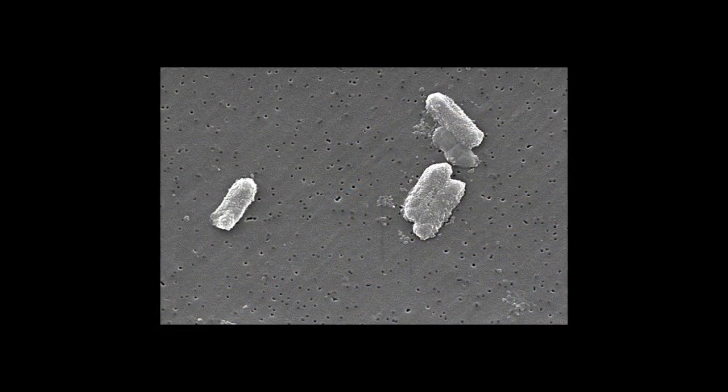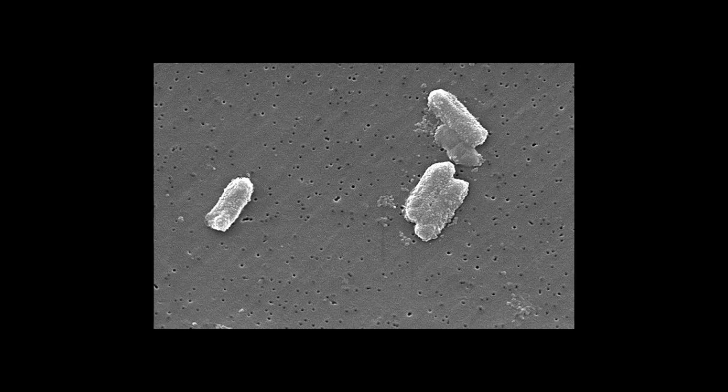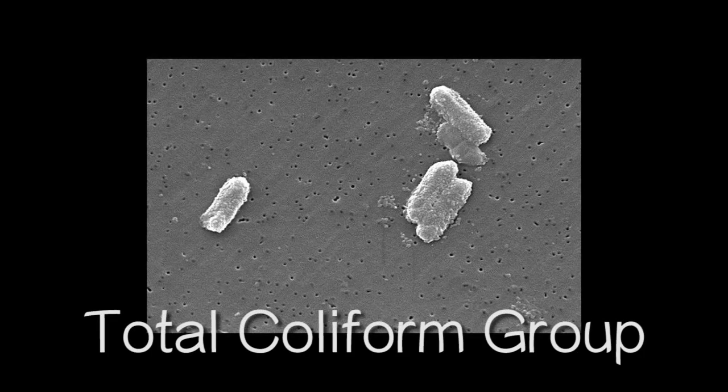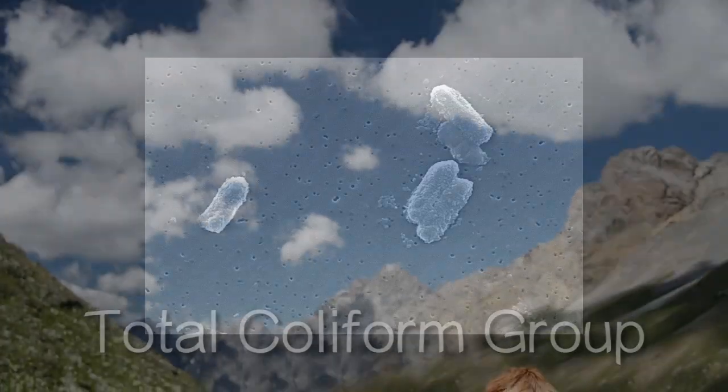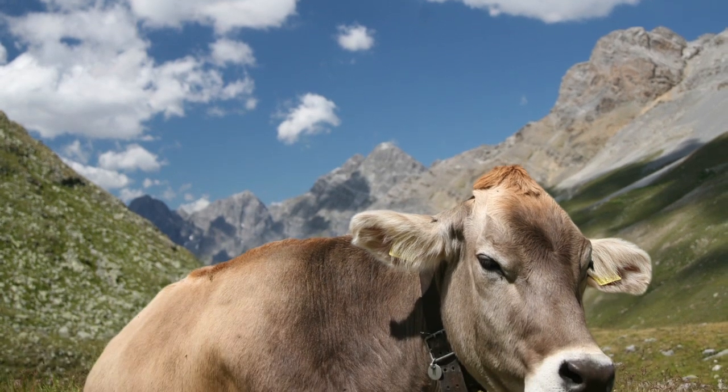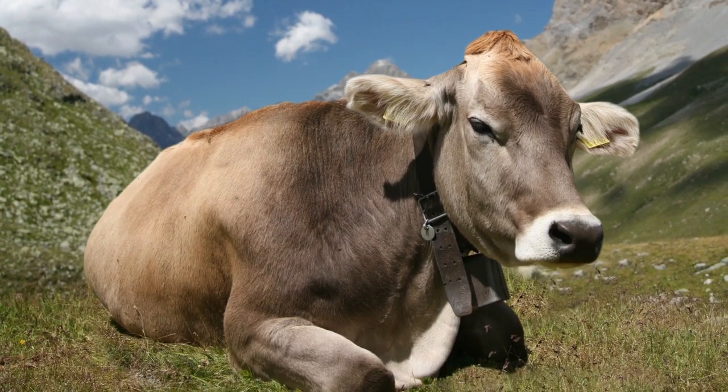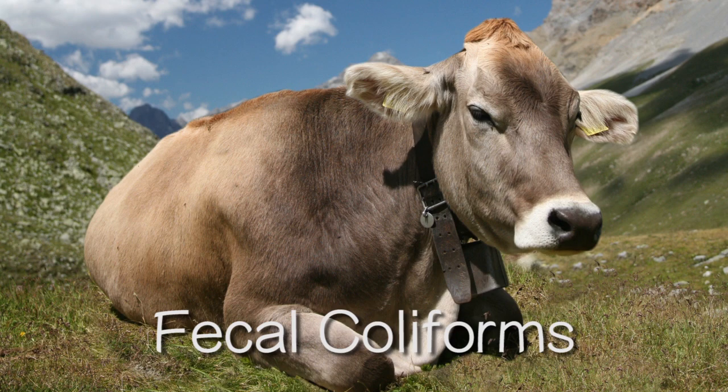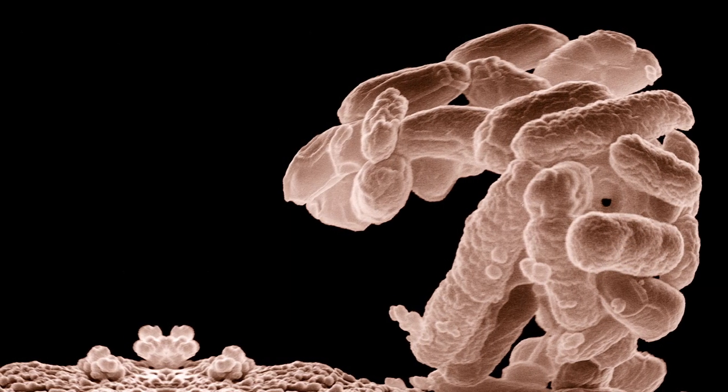There are about 100 different species of coliforms known collectively as the total coliform group, many of which live in the intestines of warm-blooded animals. These are called the fecal coliforms, and the most common fecal coliform in the human intestine is E. coli.